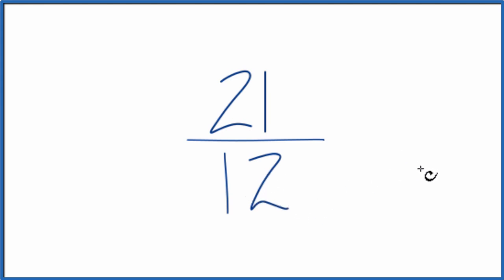So to do this, what we want to do is find another fraction that's equivalent to 21 divided by 12. It has the same value. We just want to have it with a different numerator and denominator.